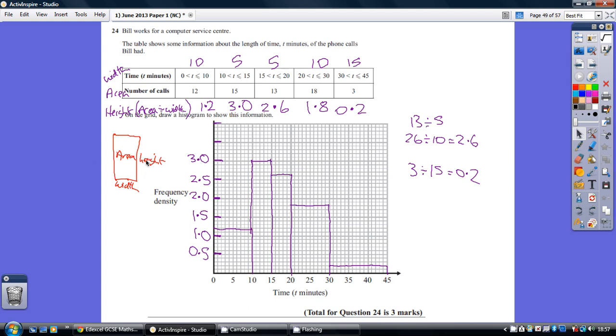How do you work out the height? Well, we know an area of a rectangle is width times height, so working backwards, height is area divided by width. So if you do area divided by width, so 12 divided by 10, you get 1.2, 15 divided by 5, you get 3, and so on.